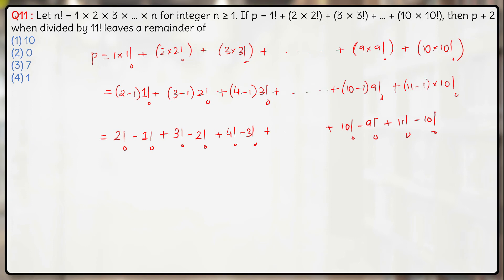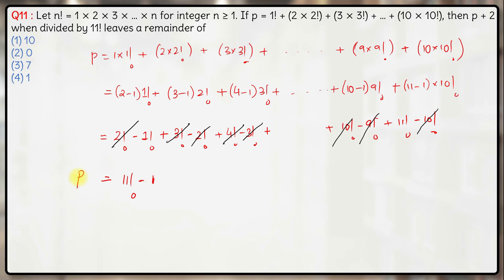Now the telescoping cancellation occurs: −2! and +2! cancel, +3! and −3! cancel, and so on — everything cancels through 9! and ±10!. What we are left with is +11! minus 1! which is minus 1. So p = 11! − 1.